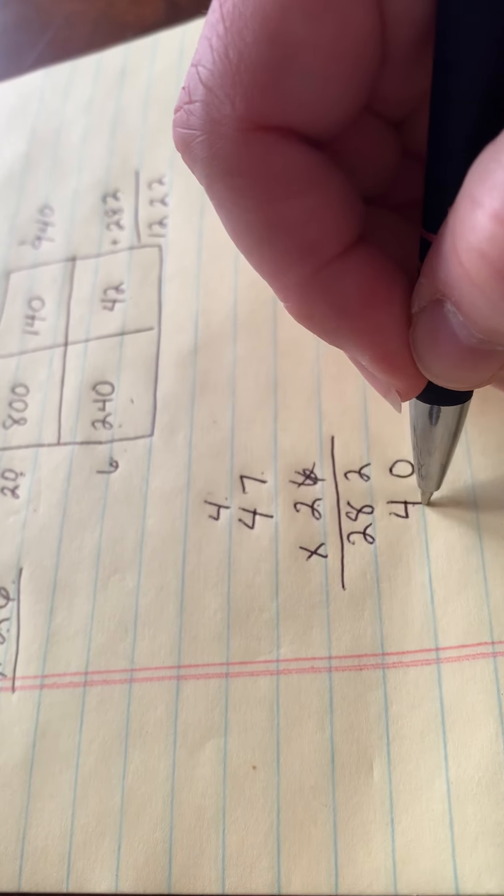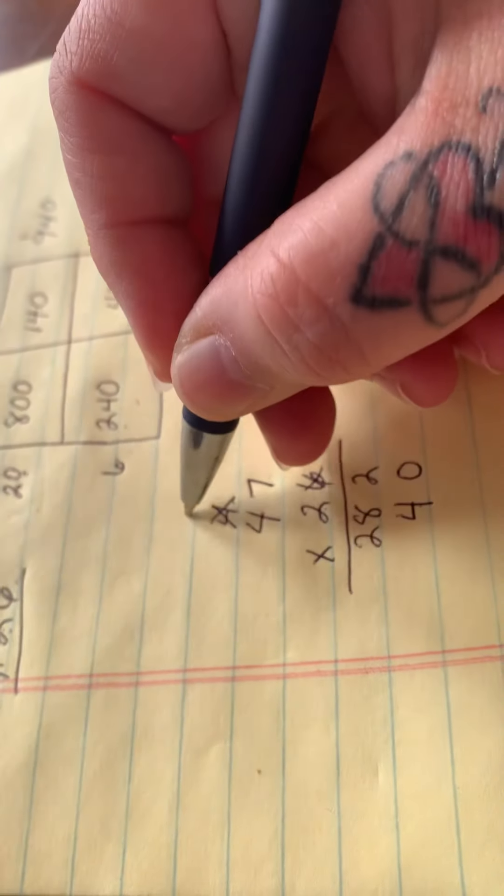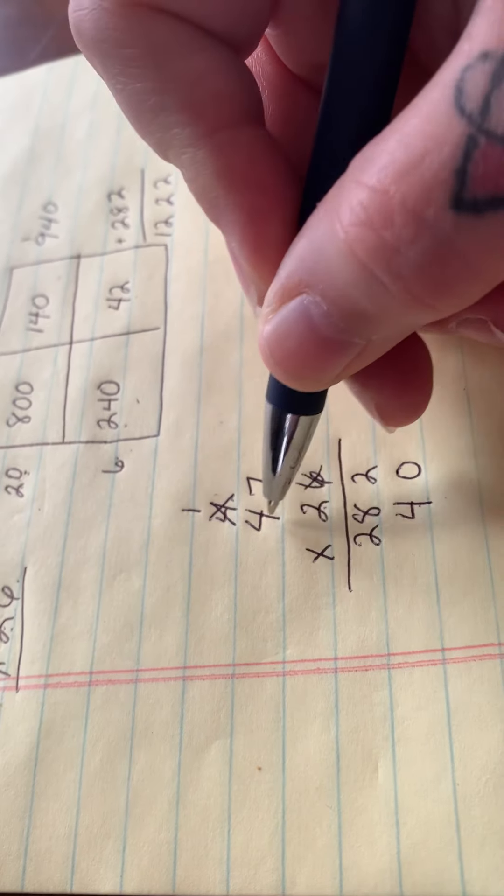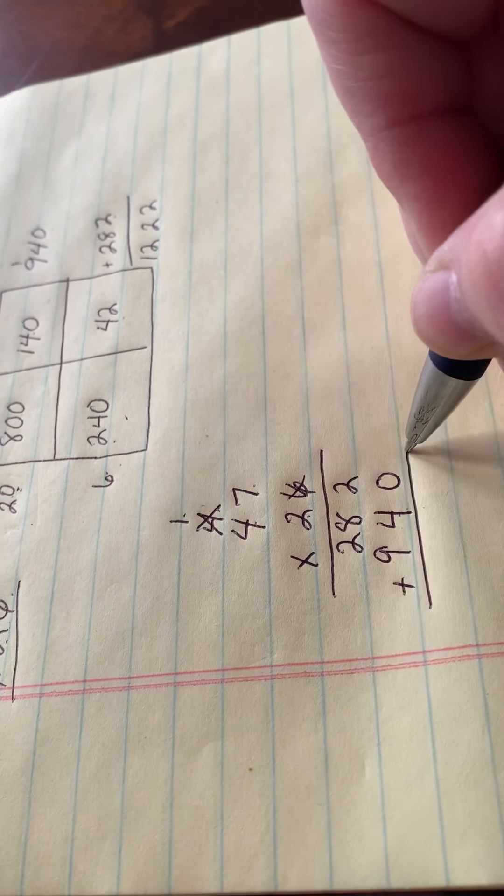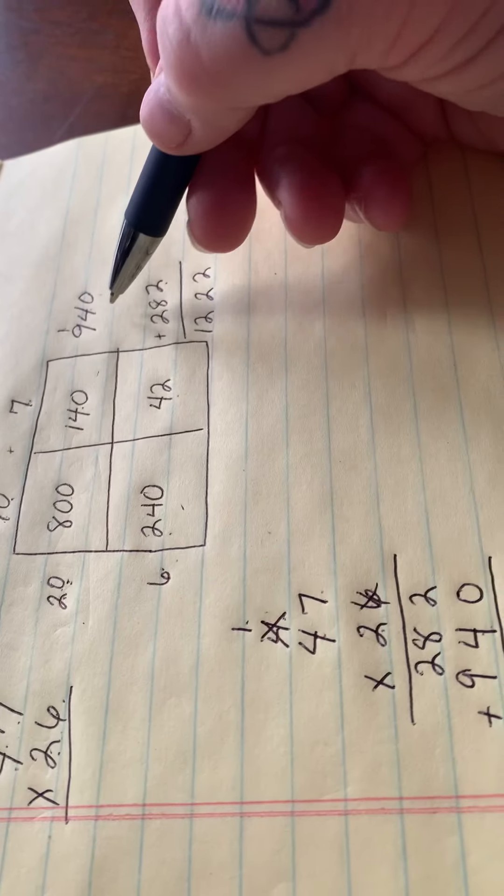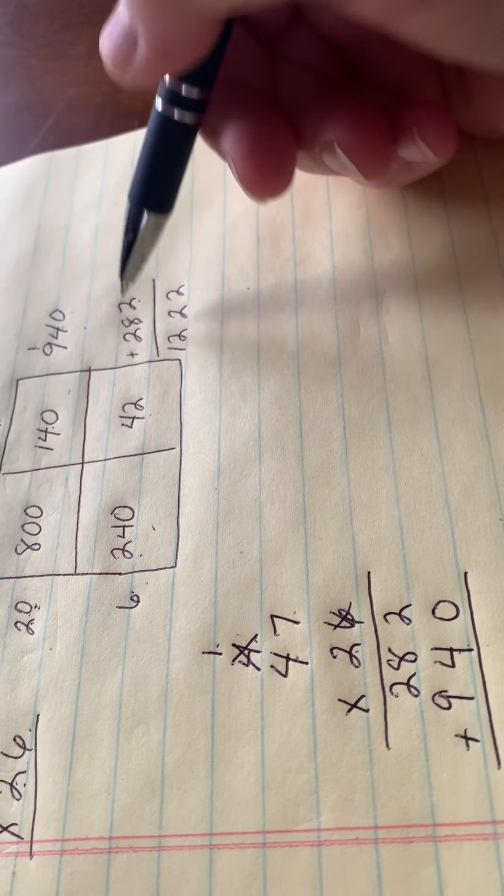2 times 7 is 14, carry your 1. 2 times 4 is 8 plus 1 is 9. Now do those numbers look familiar? Look up here. They sure do.